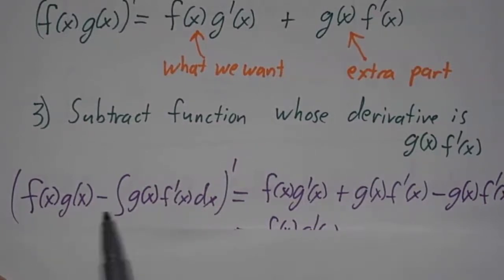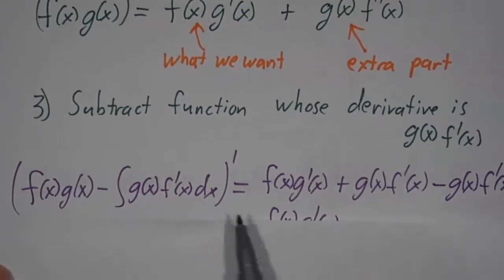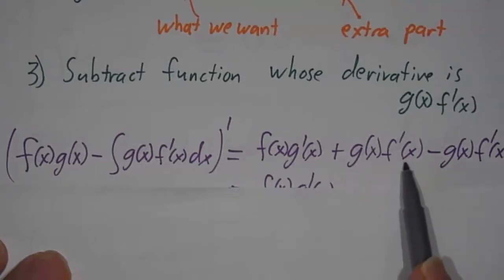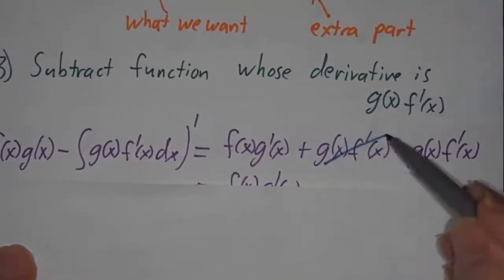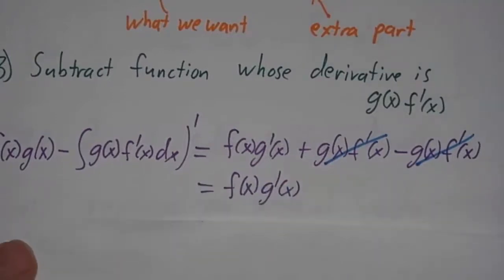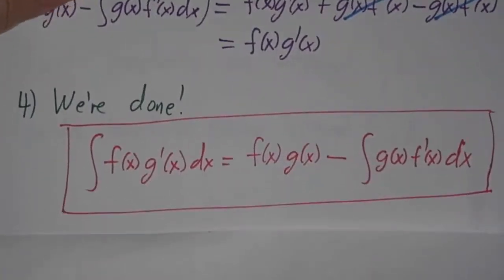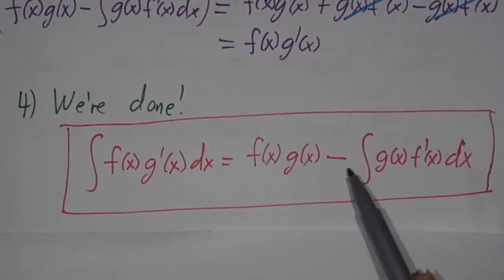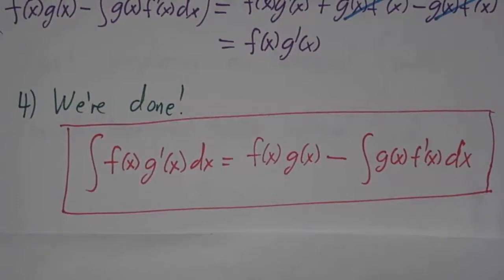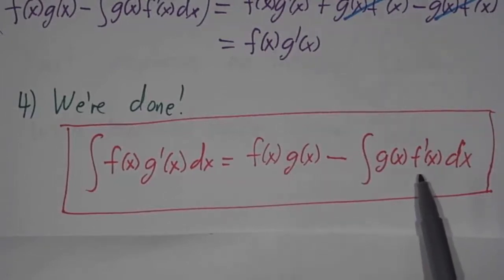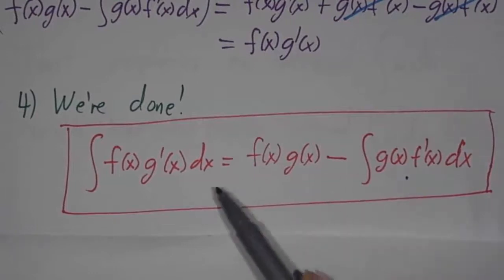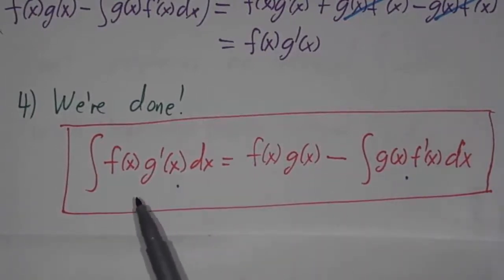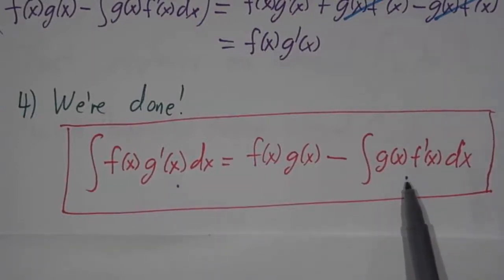The derivative of f·g minus the integral of g·f' dx is f·g' plus g·f' minus g·f'. These two cancel and you get f times g'. So the integral of f times g' dx is f times g minus the integral of g times f' dx. This doesn't look like we've gained anything — we started with one integral and wound up with another. But if you did it right, this integral is easier than the one you started with. In our example, we started with xe to the x and wound up with the integral of e to the x — something we could handle.